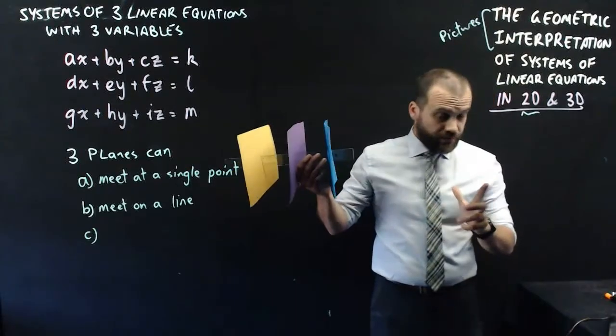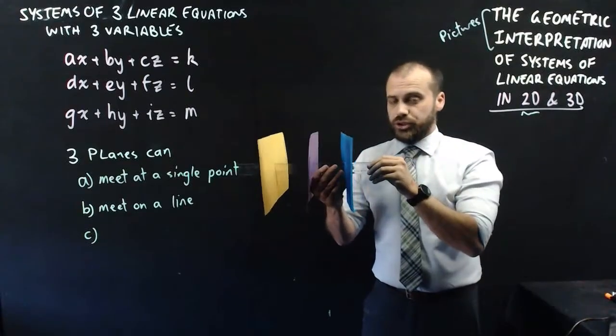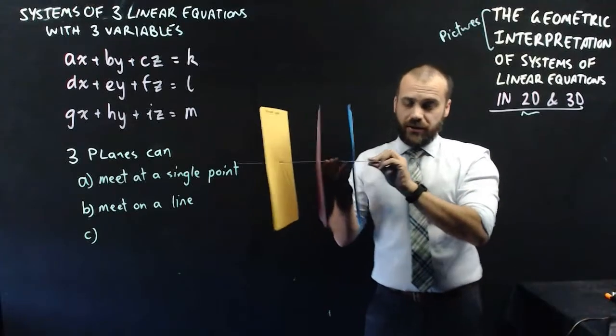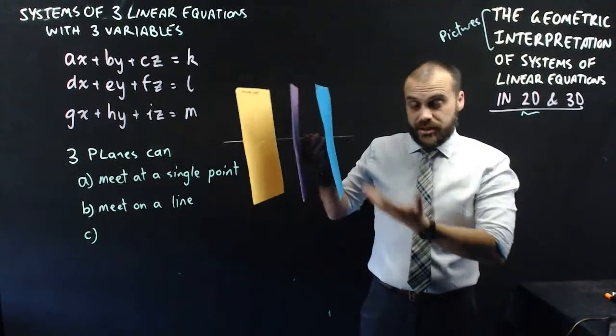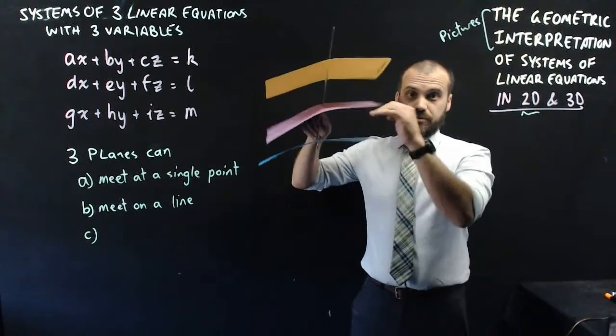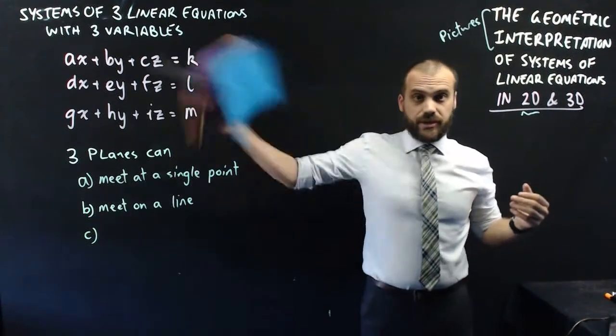This one was fun to build. All right, so we have three planes here that all share the same normal. The ruler is the normal, which means that they're all parallel to each other, which means they will never meet. You can think of them as like floors in a building. That's probably a good way to think about it, but these three planes, they're never going to meet.